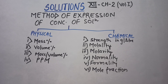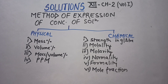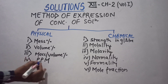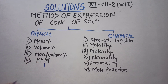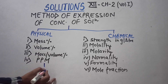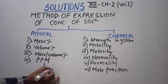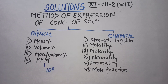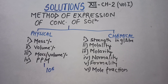PPM stands for parts per million. One million is 10 to the power 6, which is ten lakh. PPM means how much solute is dissolved per one million parts of the solution.